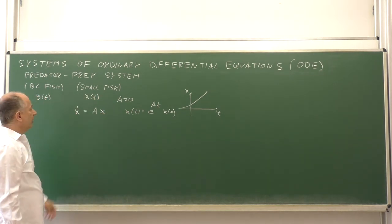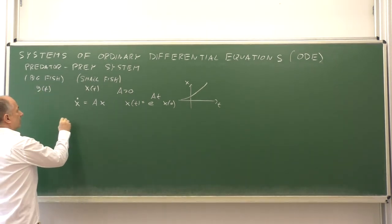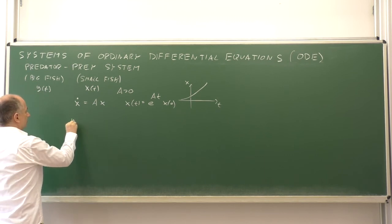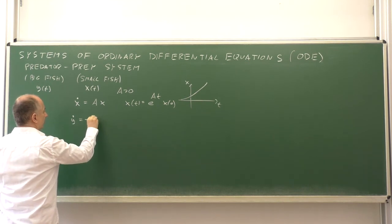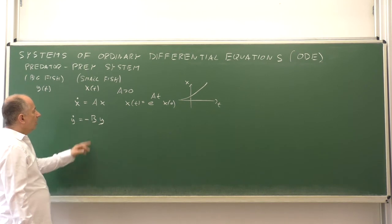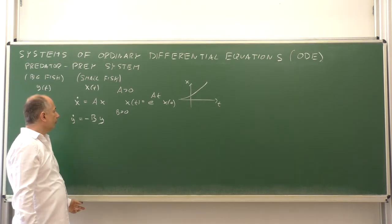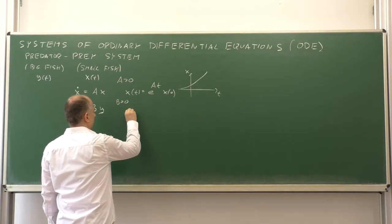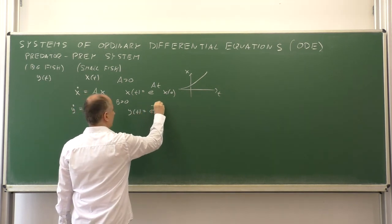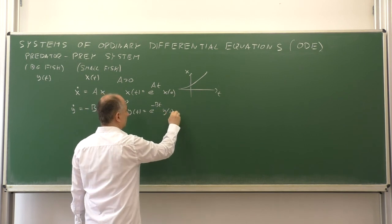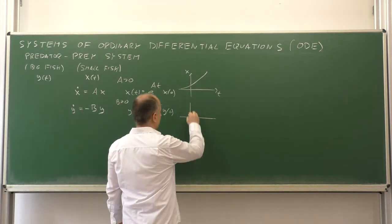On the other hand, if we have big fish alone with no small fish, then the population goes down and they die out with some constant minus b, where b is again a positive constant. This can also be solved, so that y(t) = e^(-bt) · y(0). And with the negative exponent, this goes exponentially to zero.